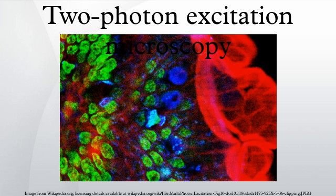Two-photon excitation microscopy is a fluorescence imaging technique that allows imaging of living tissue up to about one millimeter in depth. Being a special variant of the multiphoton fluorescence microscope, it uses red-shifted excitation light which can also excite fluorescent dyes. However, for each excitation, two photons of infrared light are absorbed. Using infrared light minimizes scattering in the tissue. Due to the multiphoton absorption, the background signal is strongly suppressed. Both effects lead to an increased penetration depth for these microscopes.